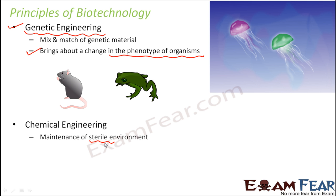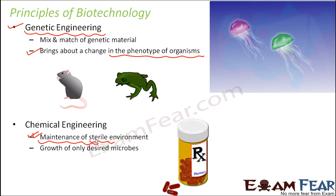Even after genetic engineering — mixing of genes — in order to produce that product, a lot of chemical processes will take place. You need to provide a sterile environment for all the chemical reactions to take place peacefully so that you get the desired product. So these are the two important principles of biotechnology: first is genetic engineering, where we mix and match genes; second is maintenance of a sterile environment, where we ensure a clean, microbe-free environment so that chemical engineering can take place appropriately.